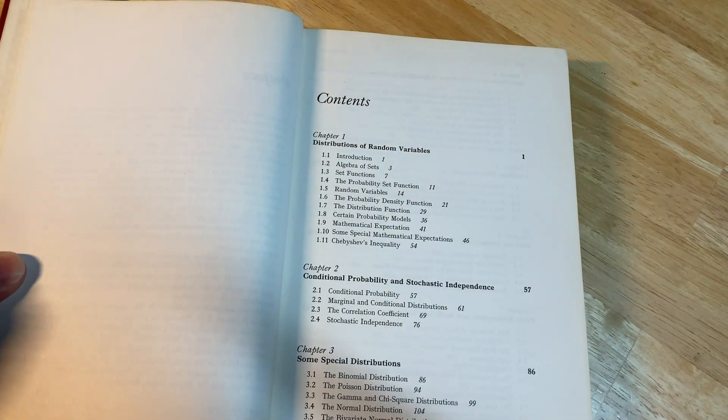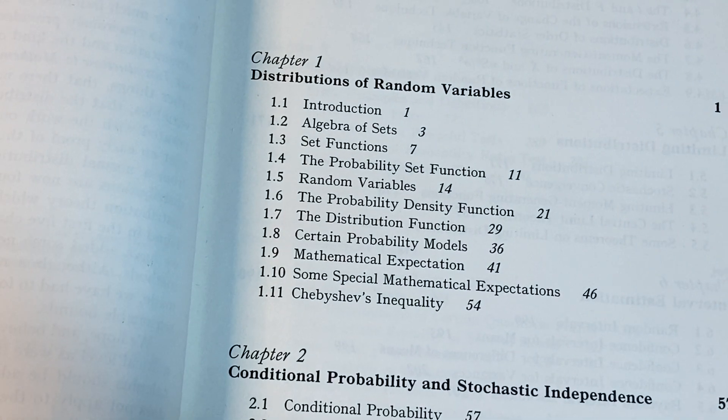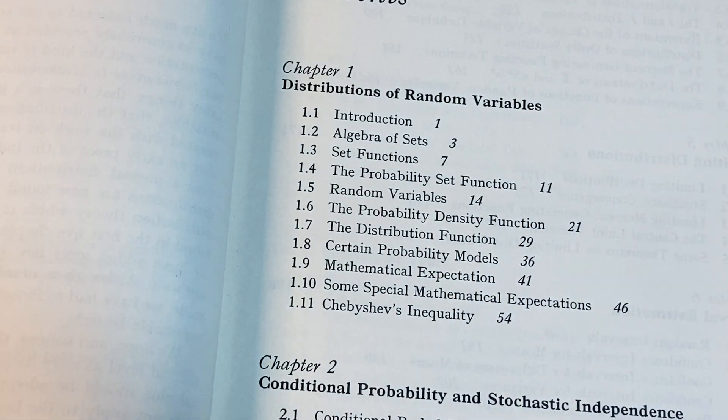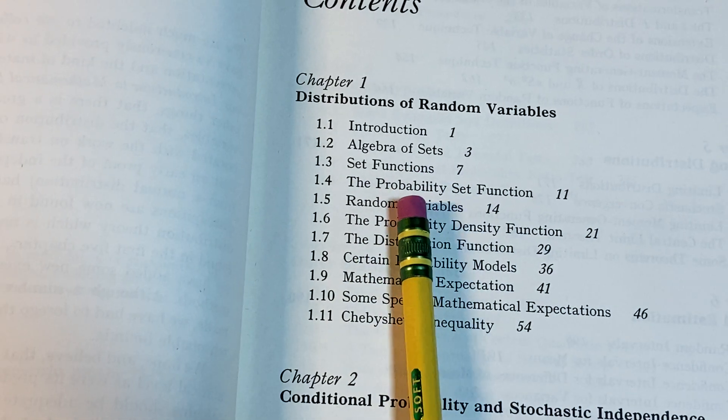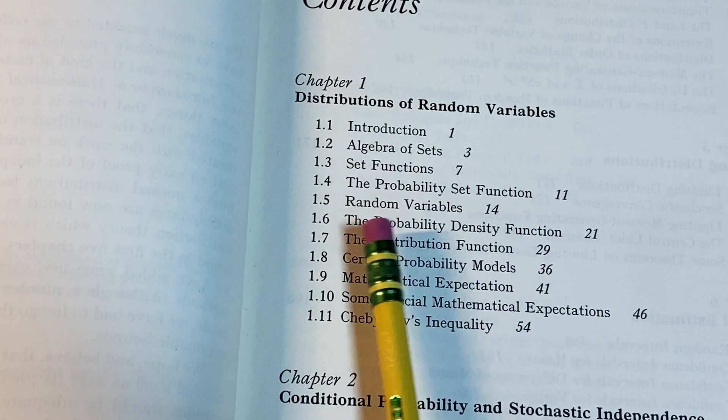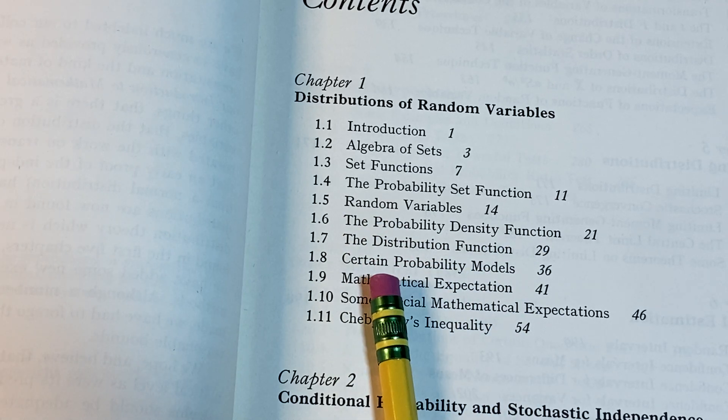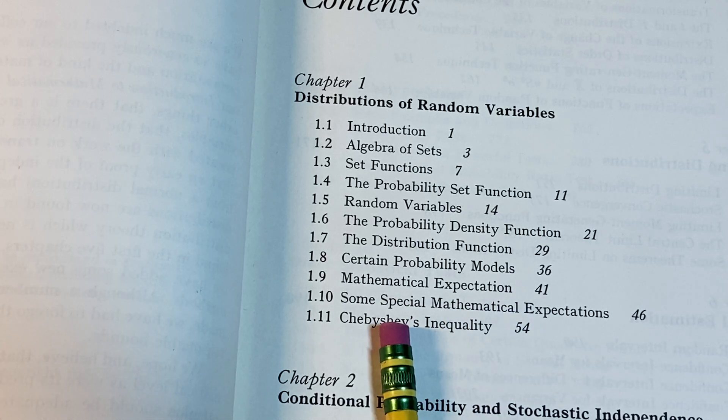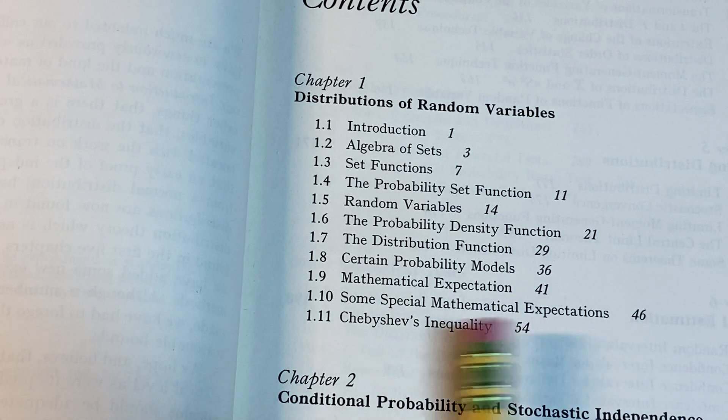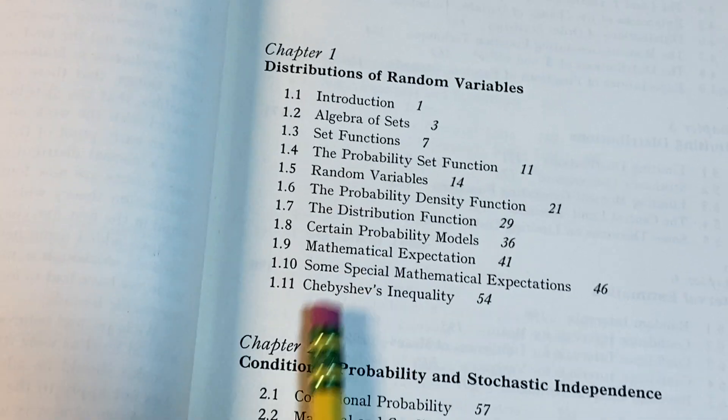And here are the contents. It starts with distributions of random variables. We have lots of cool stuff here: algebra of sets, set functions, the probability set function, random variables, the probability density function, the distribution function, certain probability models, mathematical expectation, some special mathematical expectations, and Chebyshev's inequality. That's all in chapter one.